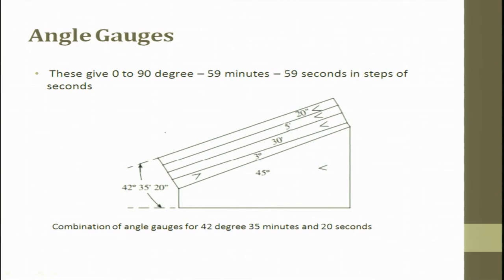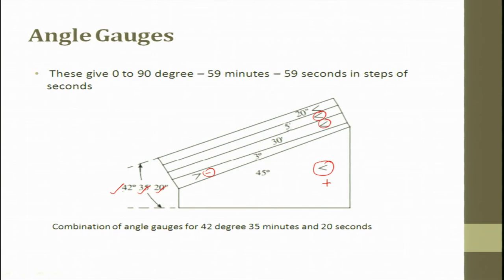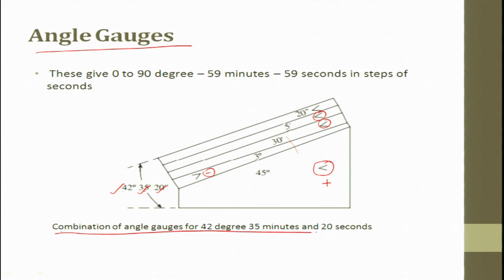Thus angles from 0 to 90 degrees, 59 minutes, 59 seconds can be generated in steps of seconds. For example: take 45 degrees (positive), subtract 3 degrees (negative) to get 42 degrees; then add 30 minutes and 5 minutes in the same direction to get 35 minutes; then add 20 minutes. The result is 42 degrees 35 minutes 20 seconds, developed by combining different angles and looking at the direction to either add or subtract.